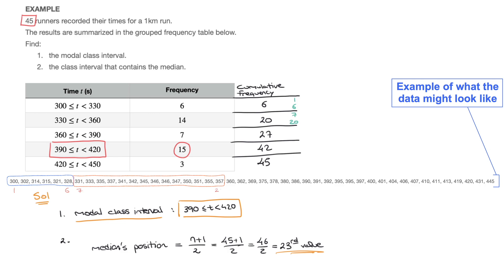I carry on this way. From the 21st value to the 27th value, the recorded times would lie between 360 and 390. And carrying on, from the 28th value to the 42nd value, the time taken would be between 390 and 420. Last but not least, from the 43rd value to the 45th value, the times recorded would all lie between 420 and 450 seconds. And although we don't have to add these digits to the cumulative frequency column, I find them really useful.